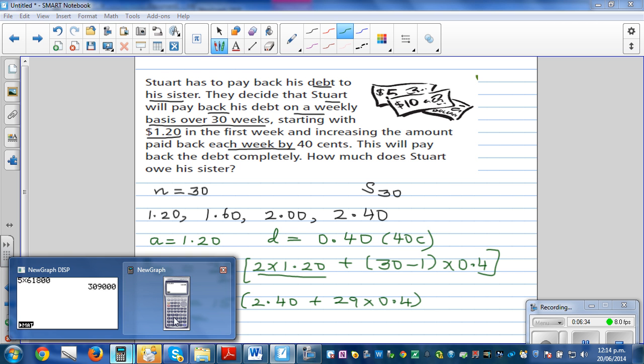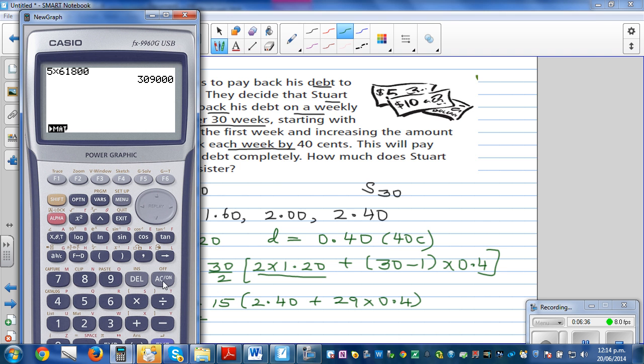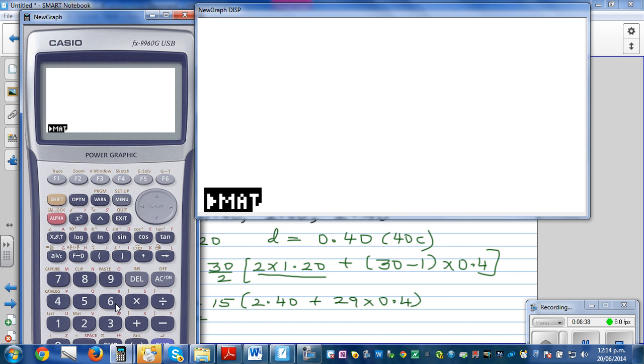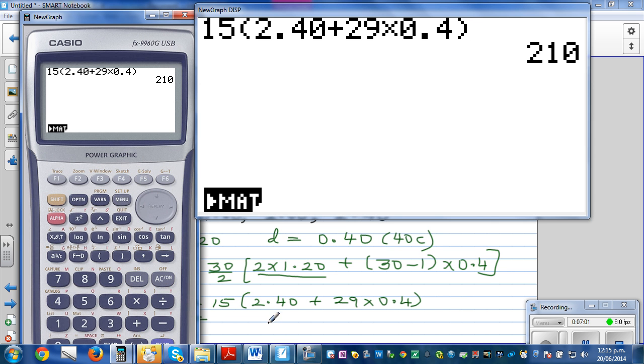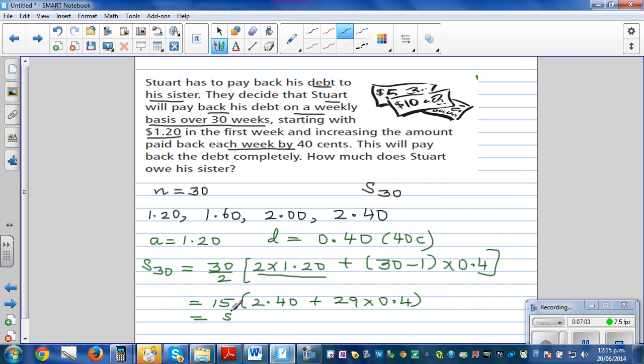So if you have a scientific calculator this will do for you. So this is 15, bracket, 2.40 plus 29 times 0.4, close the bracket, equals. He had a debt of $210.